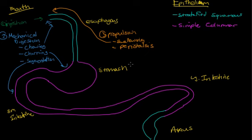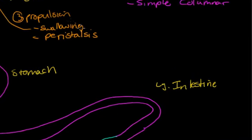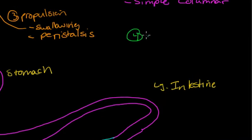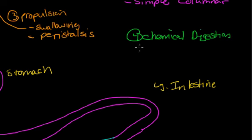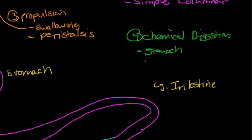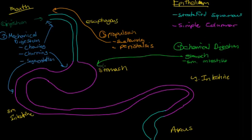The fourth step is chemical digestion, which is going to happen in the stomach and small intestine. That's breaking apart food via secretions and chemicals — the acidity in your stomach and then other enzymes in your small intestine breaking apart food.